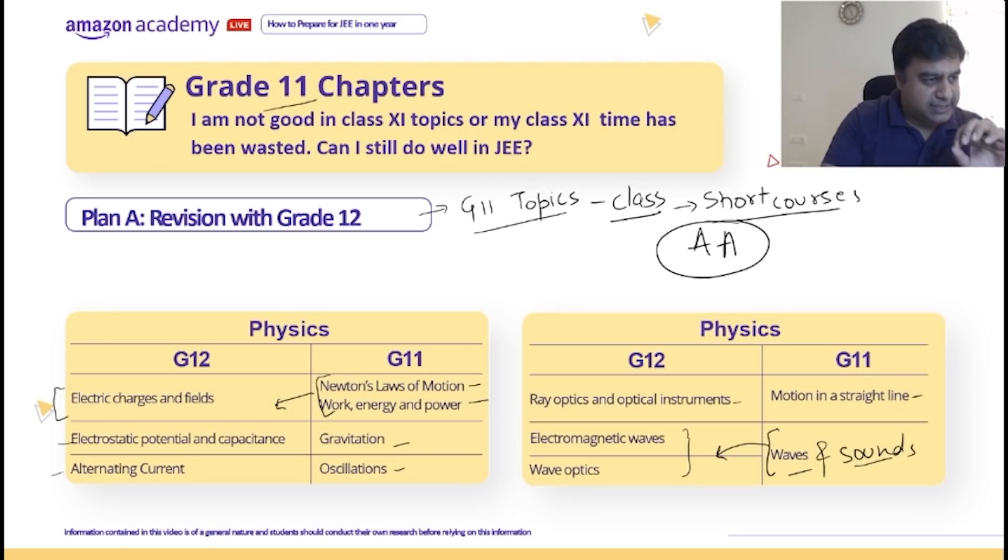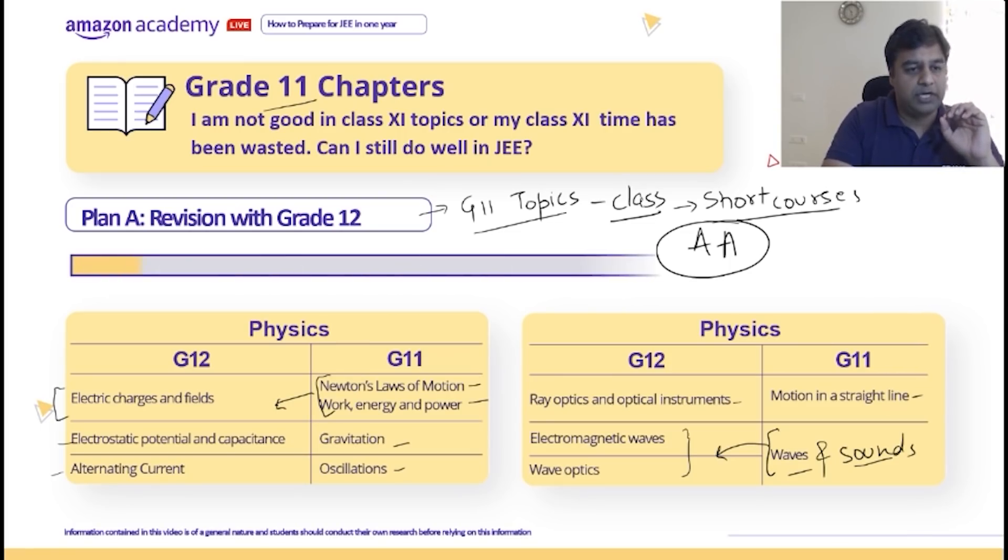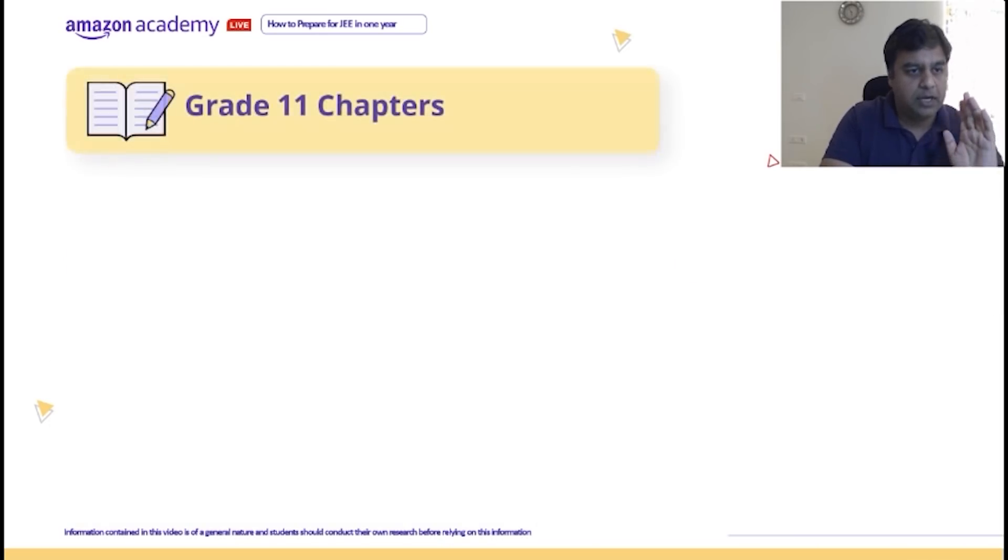Yes, this lecture will be recorded. We will come to doubt clearance also. If you can see, these chapters - how many will be in total? Six chapters out of a total of 47 chapters that we have across all three subjects: physics, chemistry, and mathematics in Grade 11. So 12.5% we will already complete with this plan.